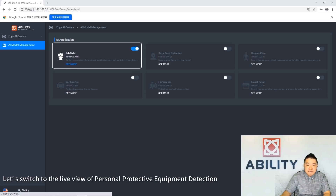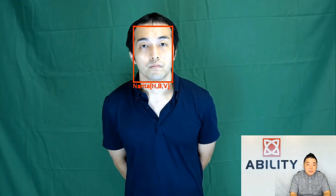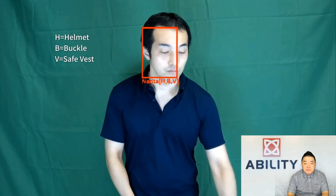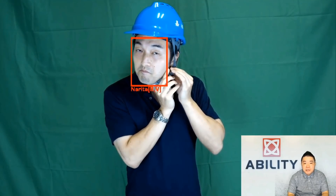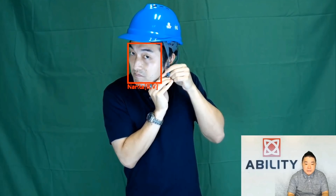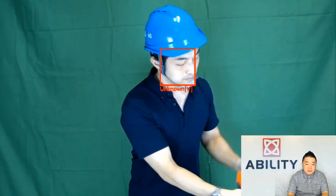Let's switch to the live view. When a person walks over to the AI camera at the checkpoint, it can identify their name — this person's name is Norita. In the red frame, H stands for helmet, B stands for buckle up, and V stands for vest. Once Norita meets all 3 requirements, the frame will turn green, meaning they are qualified to pass the checkpoint.